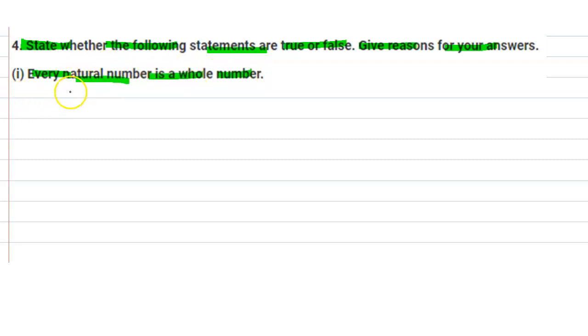First statement: every natural number is a whole number. The question is asking whether each natural number is a whole number. Natural numbers are those numbers which start from one and go to infinity - all the counting numbers are known as natural numbers.